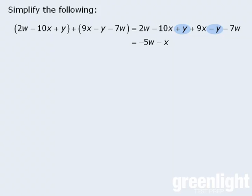Finally, +1y and -1y cancel out, leaving us with no y's. So the expression on the left simplifies to -5w - x.